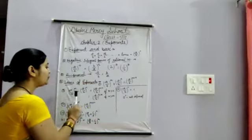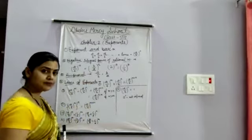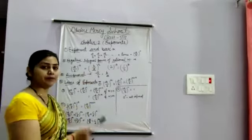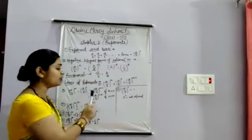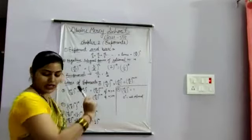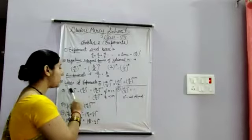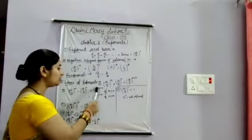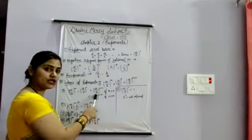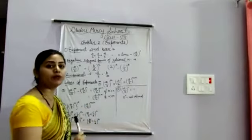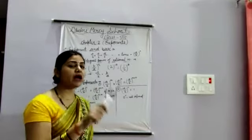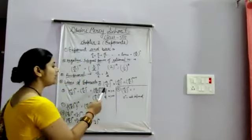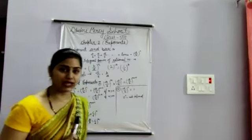The second law: if A upon B to the power M is divided by A upon B to the power N, the base is the same but the powers are different. We write the base once and subtract the powers: A upon B to the power M minus N. There are two conditions here.